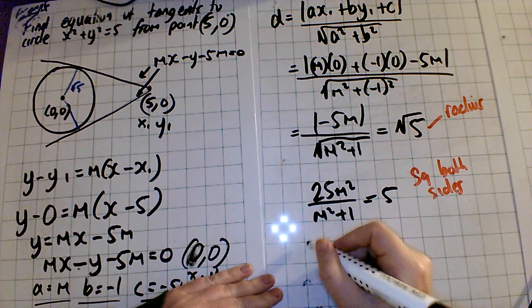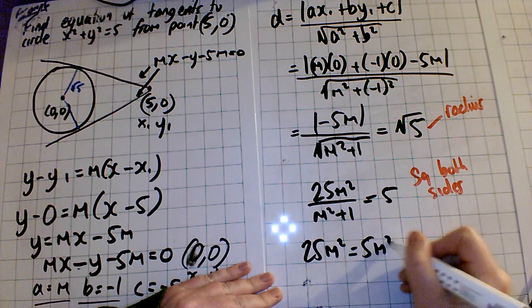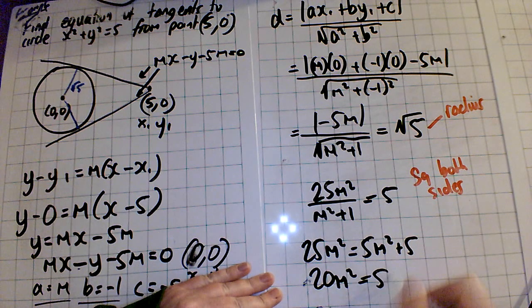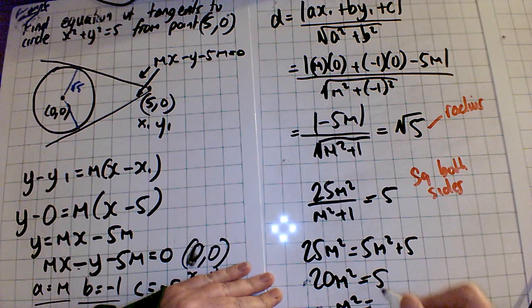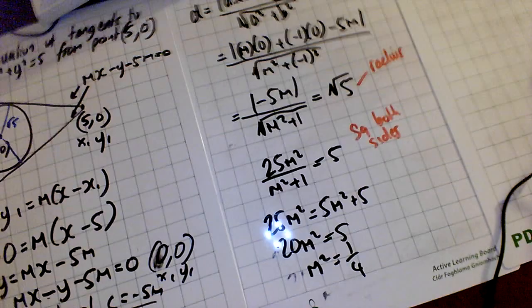We then just solve it. So we get 25m squared equals 5m squared plus 5. Bring the m's to about one side, we get 20m squared equals 5. m squared equals 5 divided by 20, which is a quarter. I'll just move that down there for you.